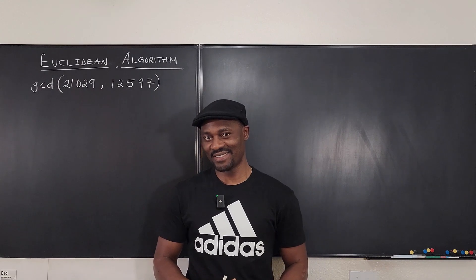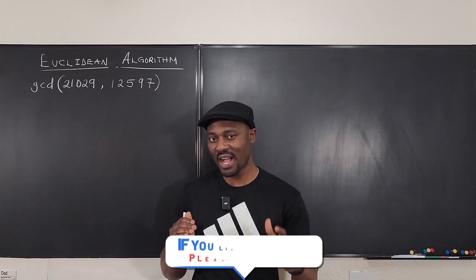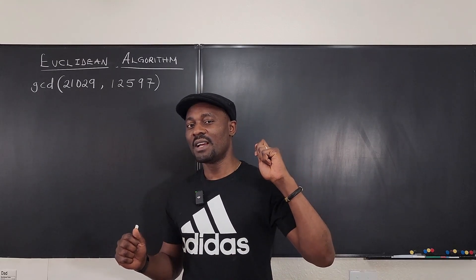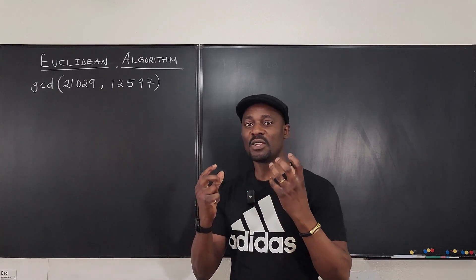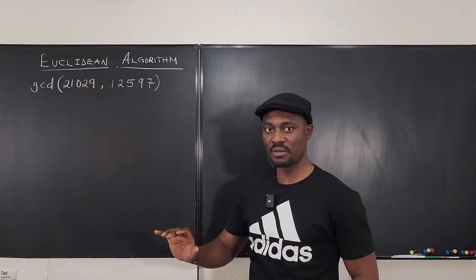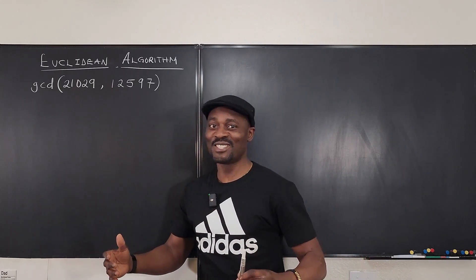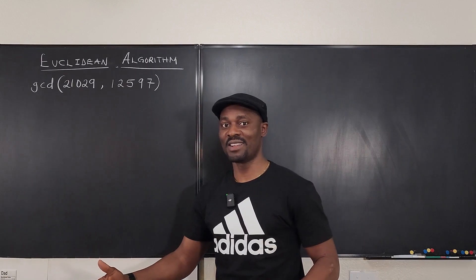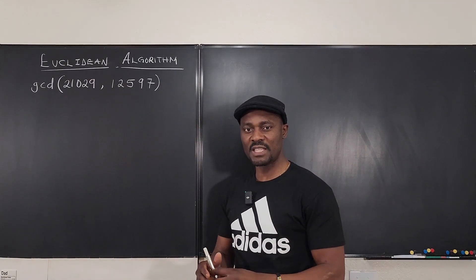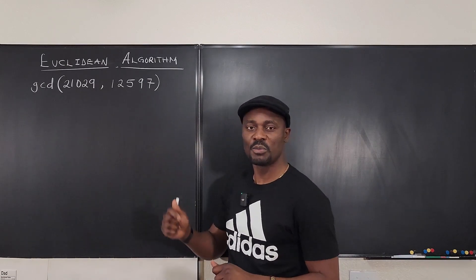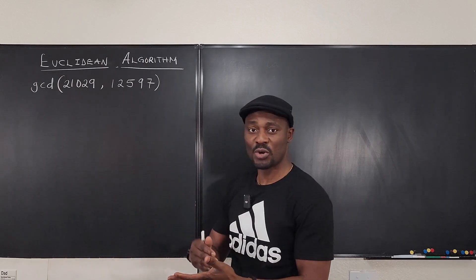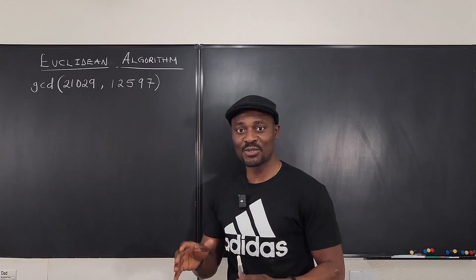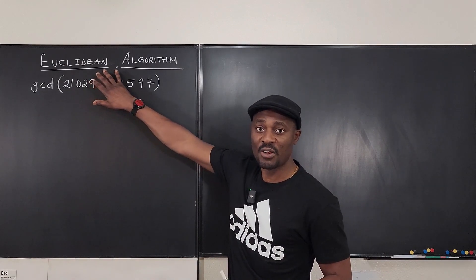Welcome to another video. This is number theory — an important area of mathematics. Imagine you're given the task to find the largest number that can divide two given numbers. It's going to be difficult to just look at them and know the answer, especially for large numbers. Even trying divisibility by two or three won't easily give you the answer. The easiest way to do this is what's called the Euclidean algorithm.